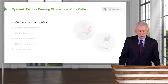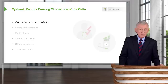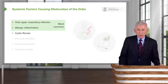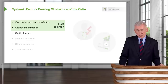The systemic factors that cause blockage of the ostia include most commonly viral upper respiratory tract infection — a common cold, for instance — or allergy. These are the two most common reasons. Patients can also be born with a problem producing very mucoid secretions, like cystic fibrosis.